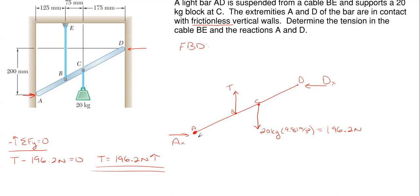When we sum moments about A, which is one of our reaction points, D_X will be our only unknown in that equation because A_X goes right through A and drops out of our moment equation, so we are only left with finding D_X.